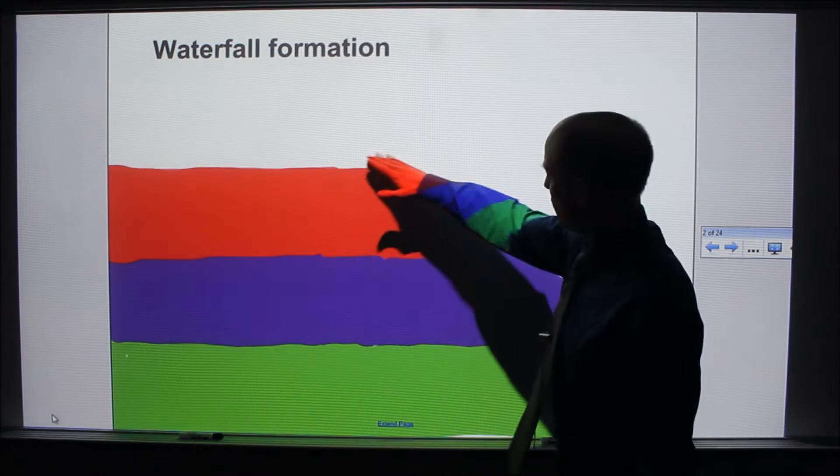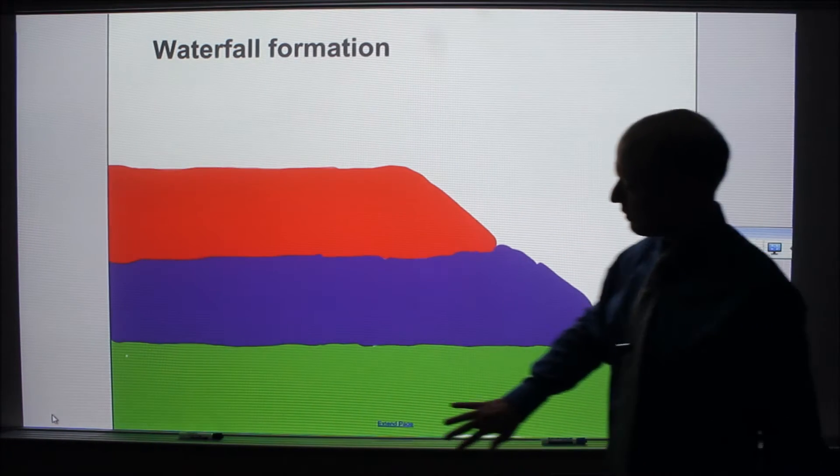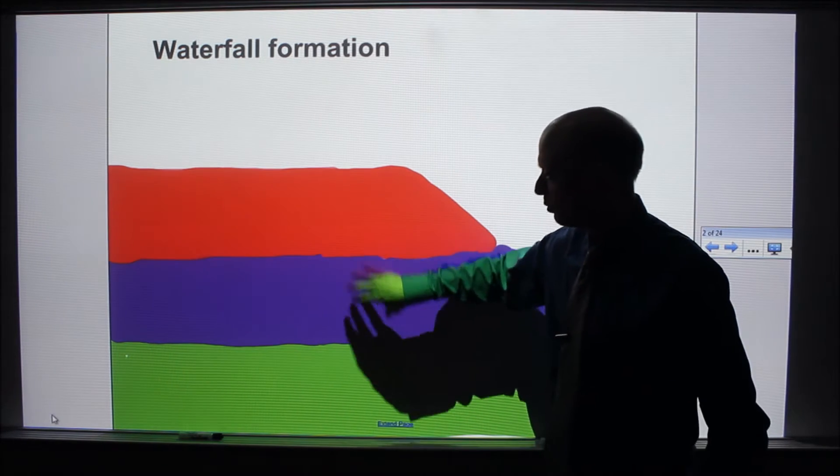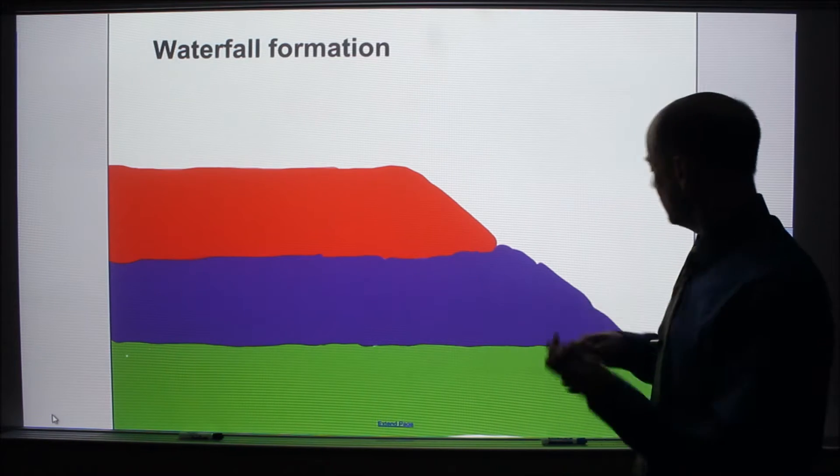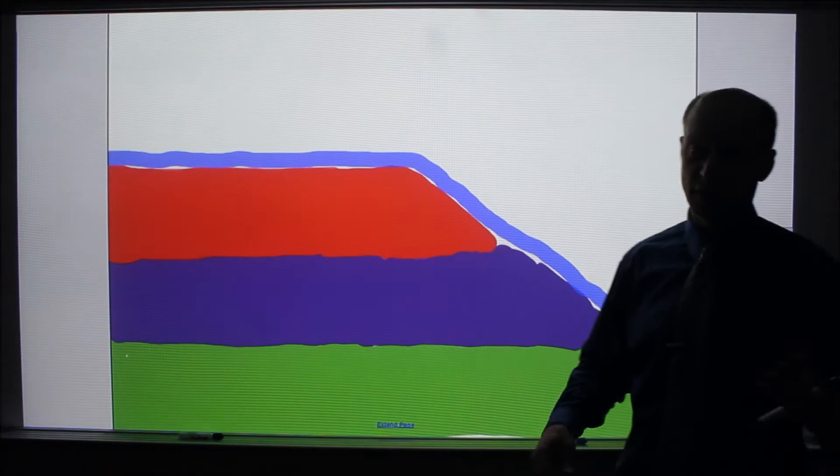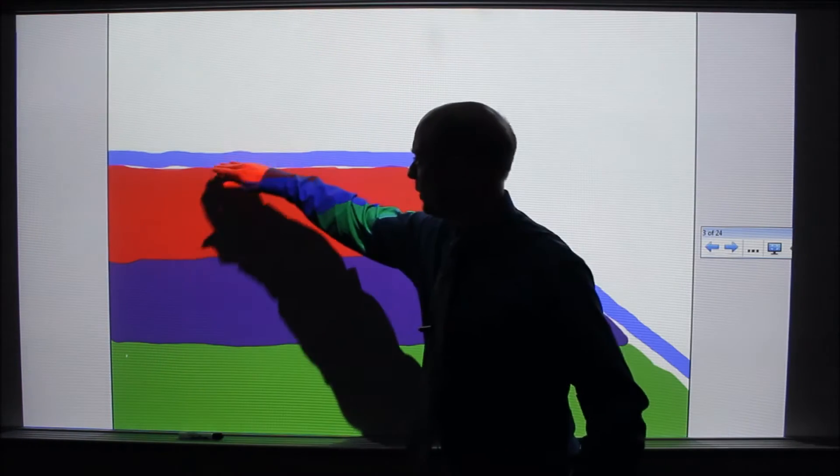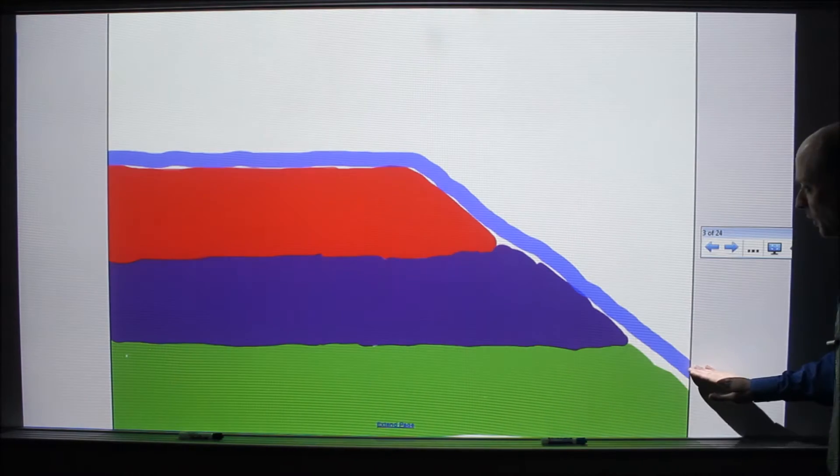Let's say we start here with a bit of a hill. These are three different layers of bedrock. Green, purple, red is what I'm using to show them. And let's say you now add a river in there. So you have a river flowing over this flat area and then flowing downhill here.